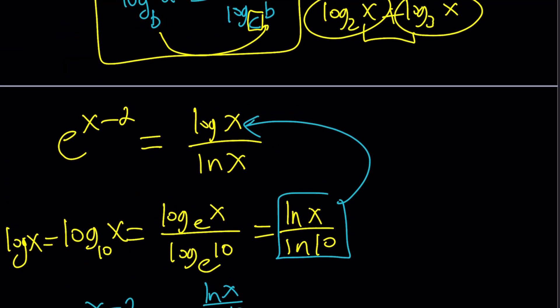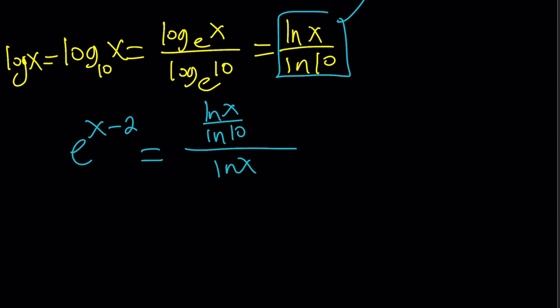We know that x cannot be 1, right? If x is 1, this is going to be undefined or indeterminate or whatever. So, we can safely say that x does not equal 1. And we also have to say x is positive, right? So, now ln x cancels out, and we end up with 1 over ln 10.